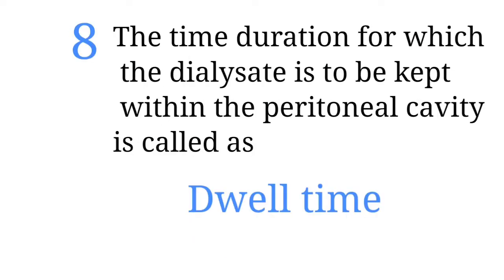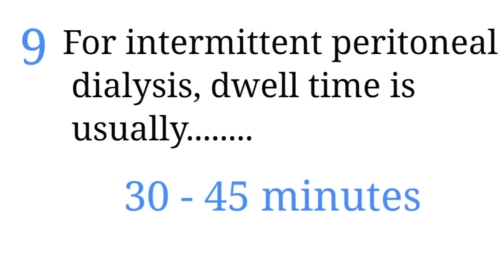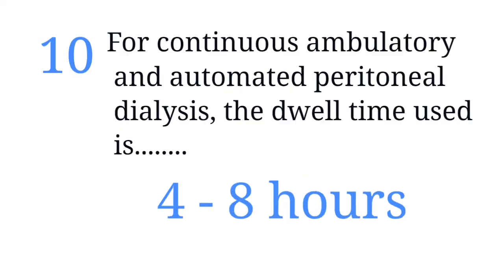The time duration for which the dialysate is to be kept within the peritoneal cavity is called dwell time. For intermittent peritoneal dialysis, the dwell time used is 30 to 45 minutes. For continuous ambulatory and automated peritoneal dialysis, the dwell time used is 4 to 8 hours.